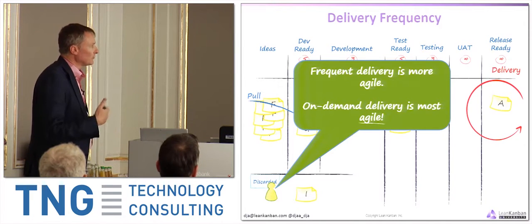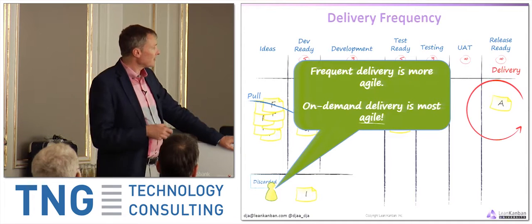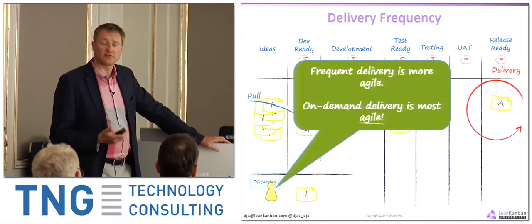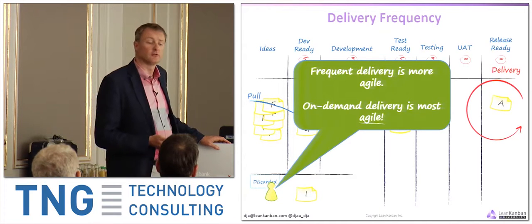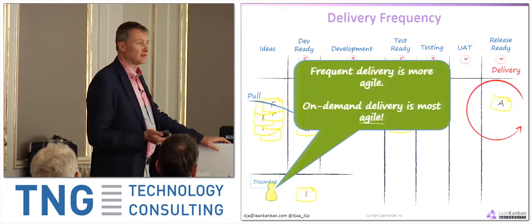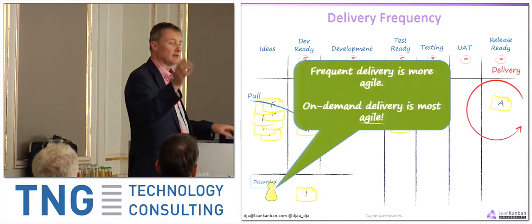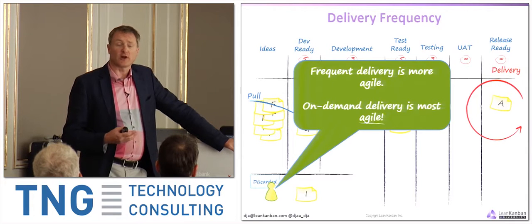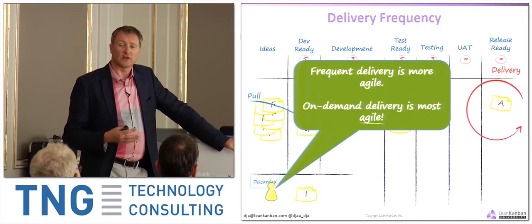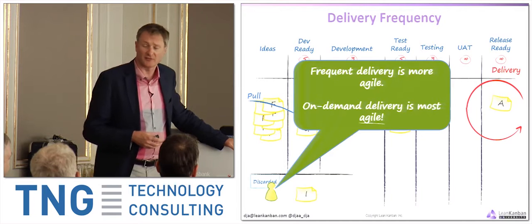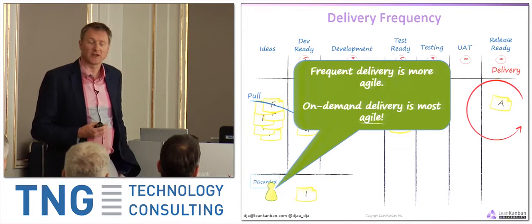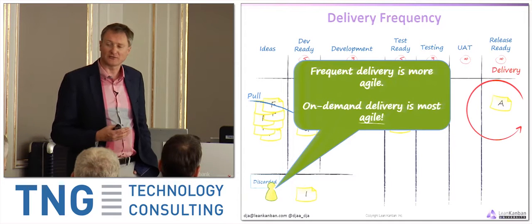Frequent delivery is more agile. On-demand delivery would be the most agile, and in the software world that's reasonably possible nowadays — even on things like space probes heading into the outer reaches of the solar system, or fighter aircraft, where they can actually upgrade software while the pilot is flying it, which is a somewhat scary thing.